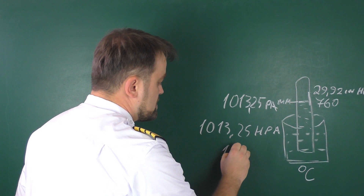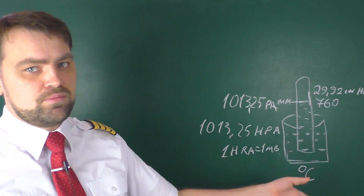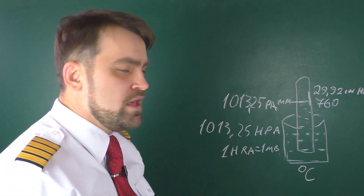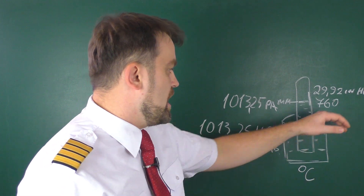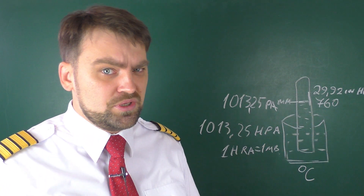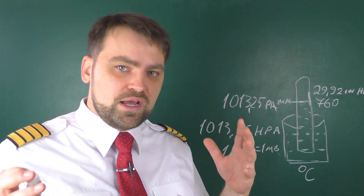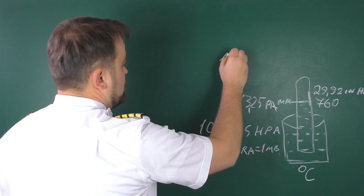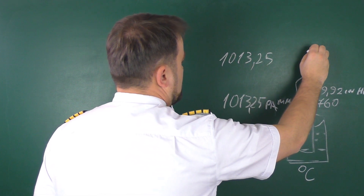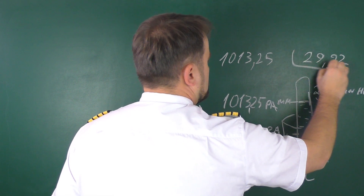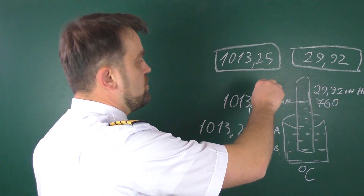Adding a decimal point gives us 1013.25 hectopascals. One hectopascal equals one millibar, so sometimes you see the millibar scale on your altimeter and sometimes hectopascals — they are the same. If you fly in an ex-Soviet airplane you will see 760 millimeters on your altimeter setting. Most modern altimeters show the 1013 setting for standard pressure, with two windows showing both hectopascals and inches. Changing the scale changes both.